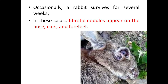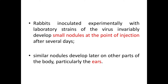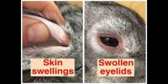Occasionally a rabbit survives for several weeks. In these cases, fibrotic nodules appear on the nose, ears, and forefeet. You can see the fibrotic nodules near the eyes, nose, and ears in this picture. Rabbits inoculated experimentally with laboratory strains of virus invariably develop small nodules at the point of injection after several days. Similar nodules develop later on other parts of the body, particularly the ears. Here you can see the skin swellings and swollen eyelids, which are some clinical signs of myxomatosis.